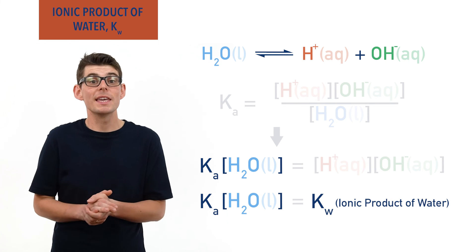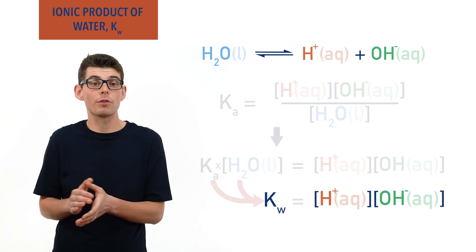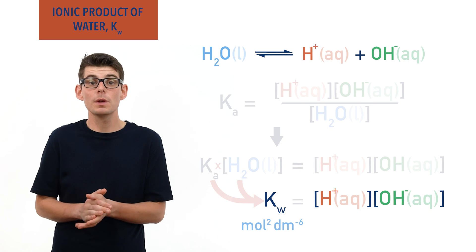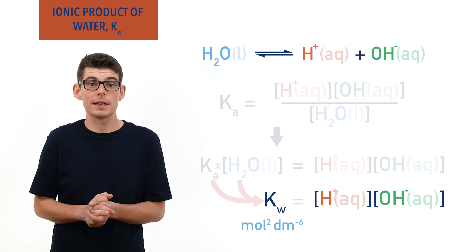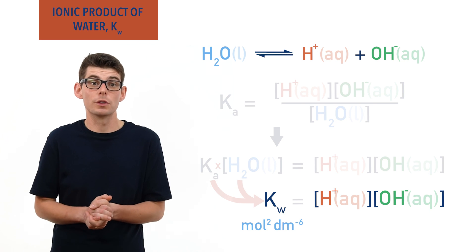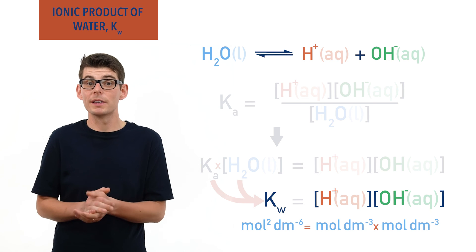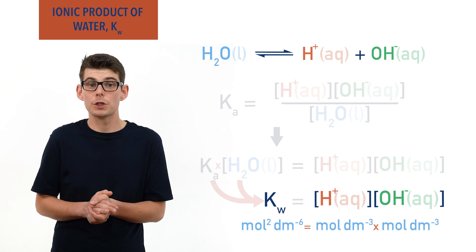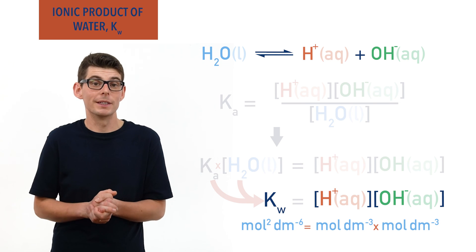KW equals concentration of H plus times concentration of OH minus with the units moles to the power 2 decimetre to the power minus 6. As we are times in two concentrations together, mole per decimetre cubed times mole per decimetre cubed equals mole to the power 2 times decimetre to the power minus 6.